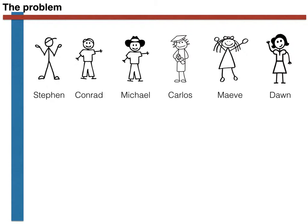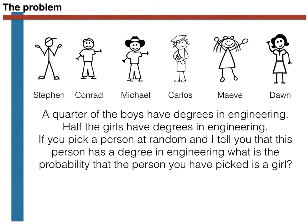Here are my infamous set of Blind Man Bluff players. I tell you that a quarter of the boys have degrees in engineering and that half the girls have degrees in engineering. There is an equal probability of picking each player. I tell you that you picked an engineer and I want you to tell me the conditional probability that the person you picked is a girl. Pause the video and take some time to work out an answer.